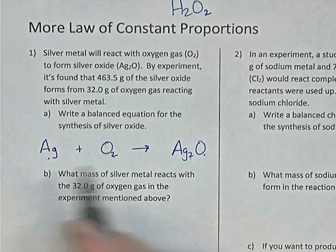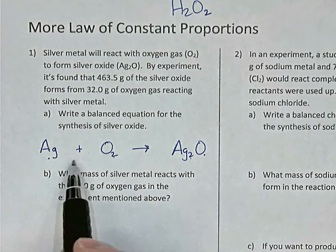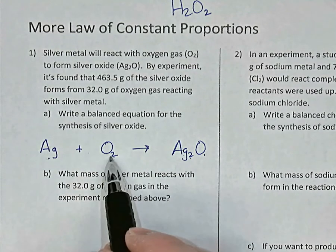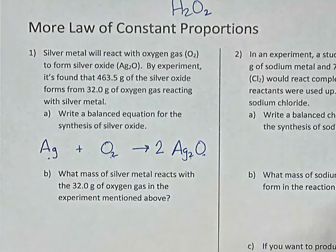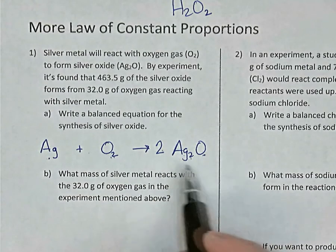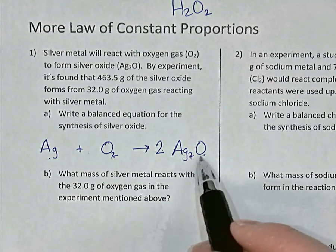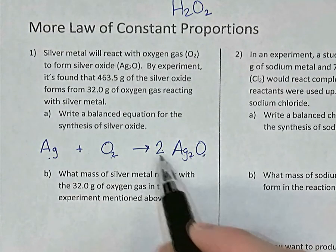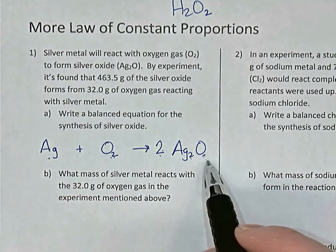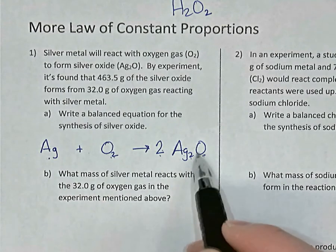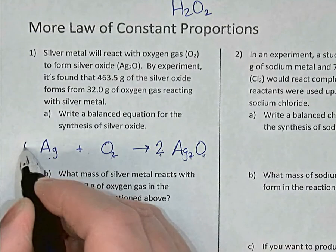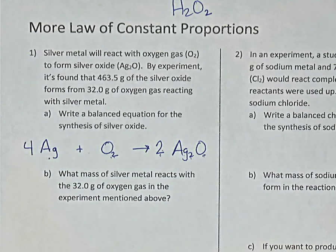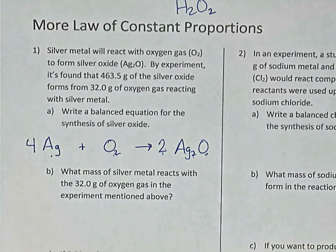Let's fix the Law of Conservation of Mass by balancing. I have 2 oxygens on the left and only 1 oxygen on the right, so I put a 2 in front of silver oxide, giving 2 molecules of Ag₂O. Since each has a single oxygen, 2 of them give 2 oxygens. But each molecule has 2 silvers, so with the coefficient of 2, that's 4 silver atoms on the right — I fix that by putting a 4 in front of silver on the left. There's my balanced equation.